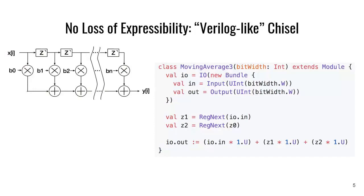As an example, this is a Chisel module that computes a moving average. The structure is similar to an FIR filter where we have some input, we're registering it over a few cycles, and then we're doing some computation — we're weighting them all equally and adding them together to get the moving average. This is our instance and we can control everything, but now I have a few questions.